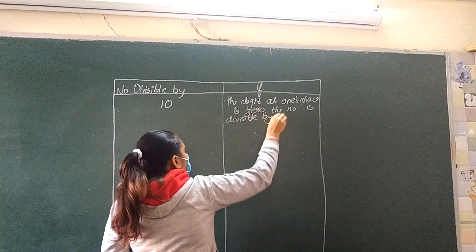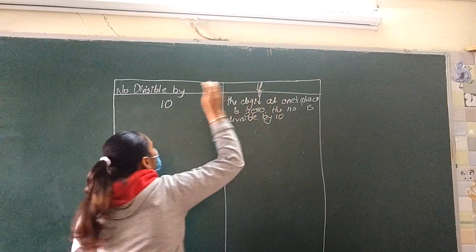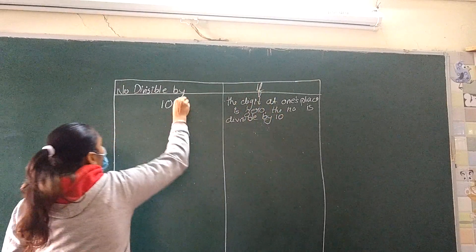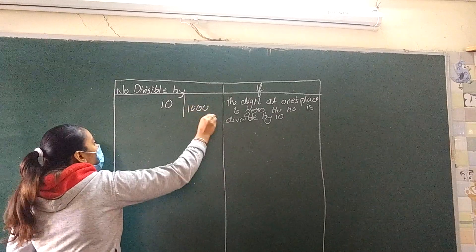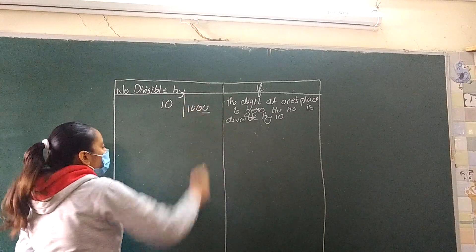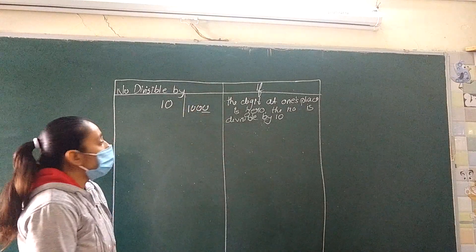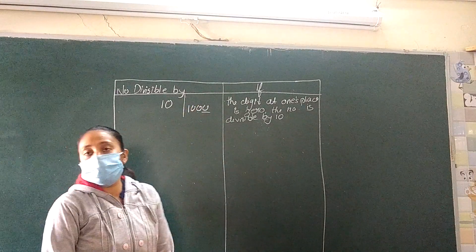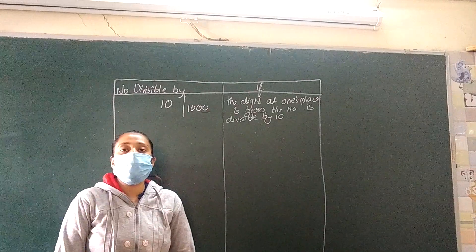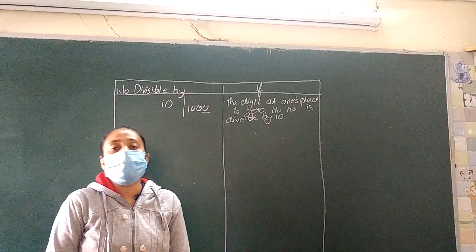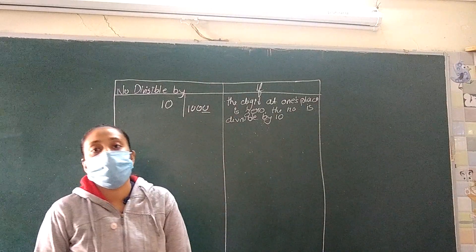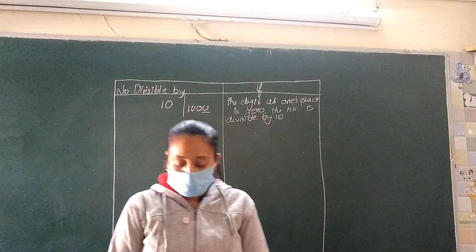Let's take one example. Say, 1000. The digit at the 1's place is 0, so we can say that the number is divisible by 10.